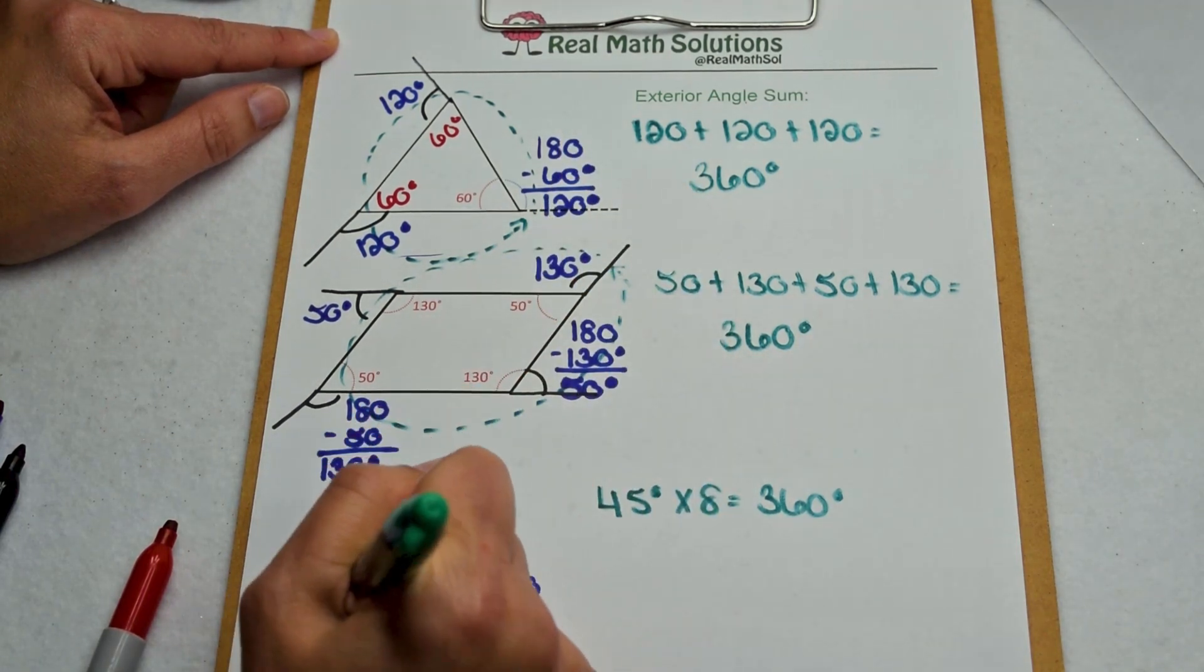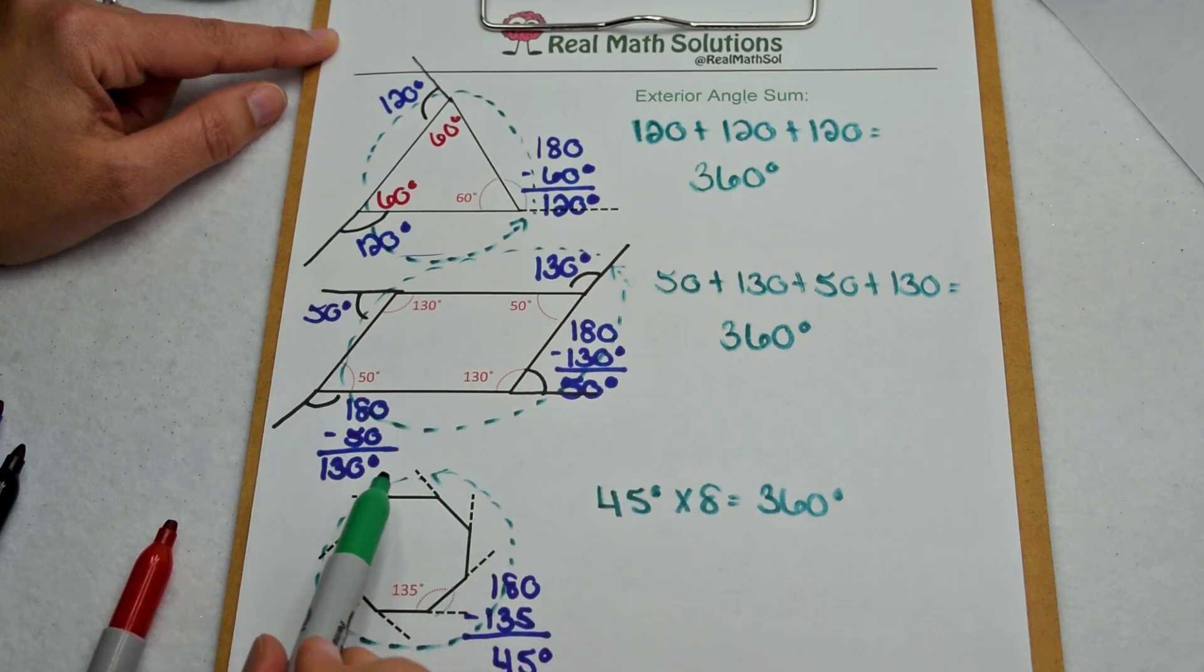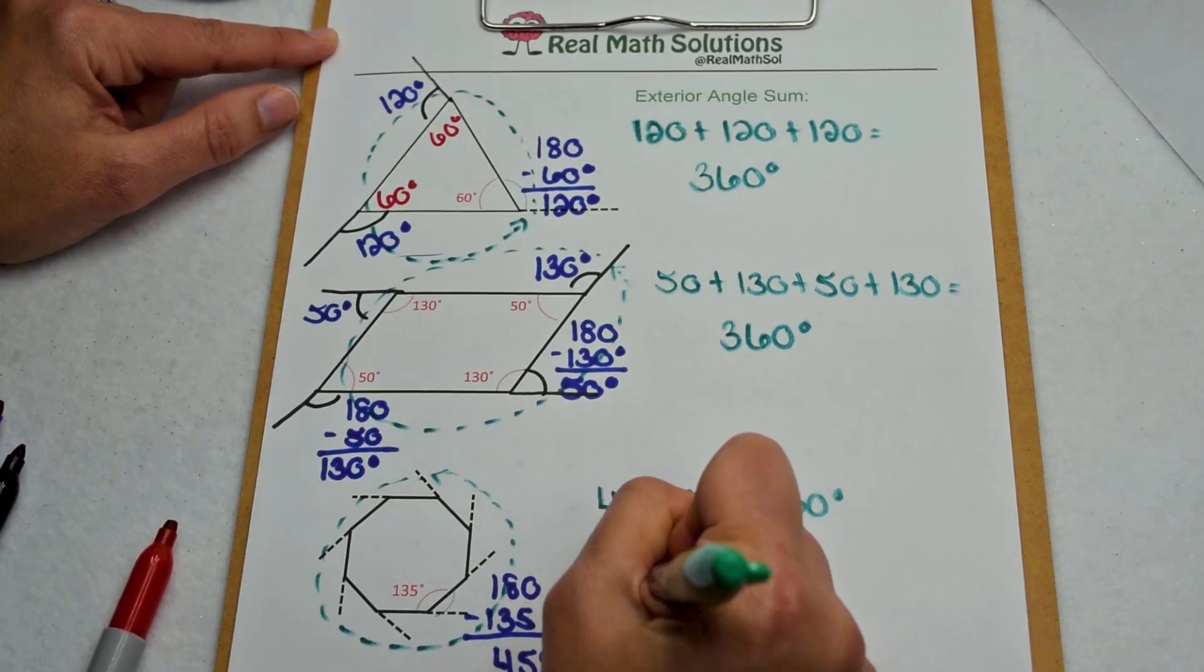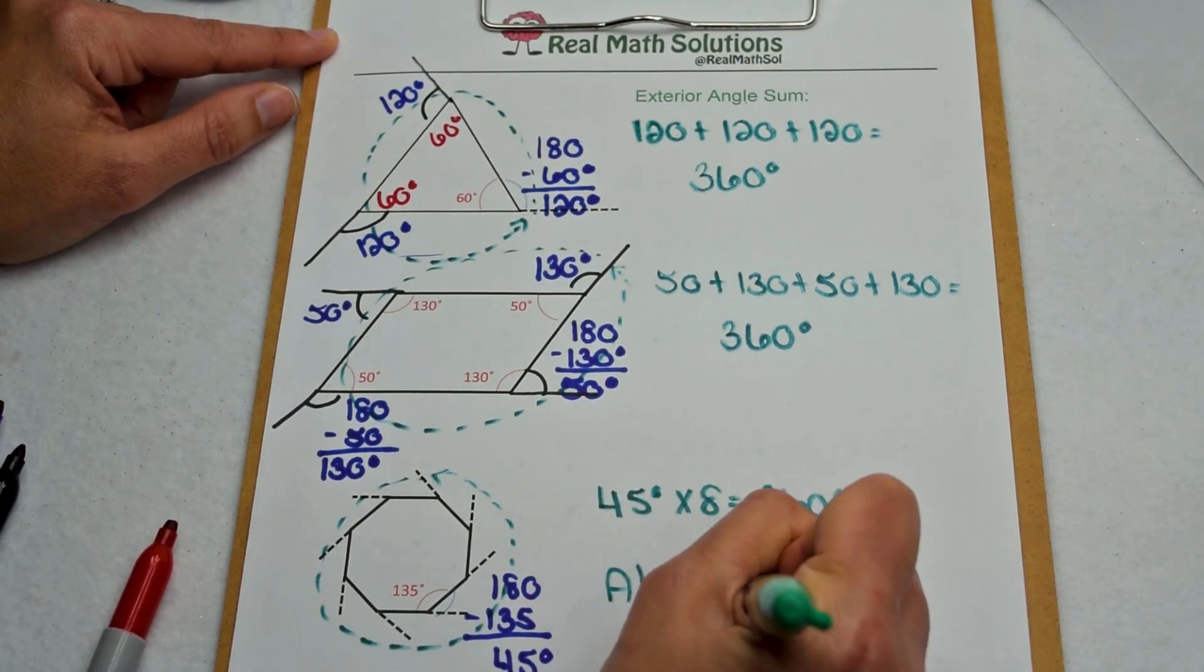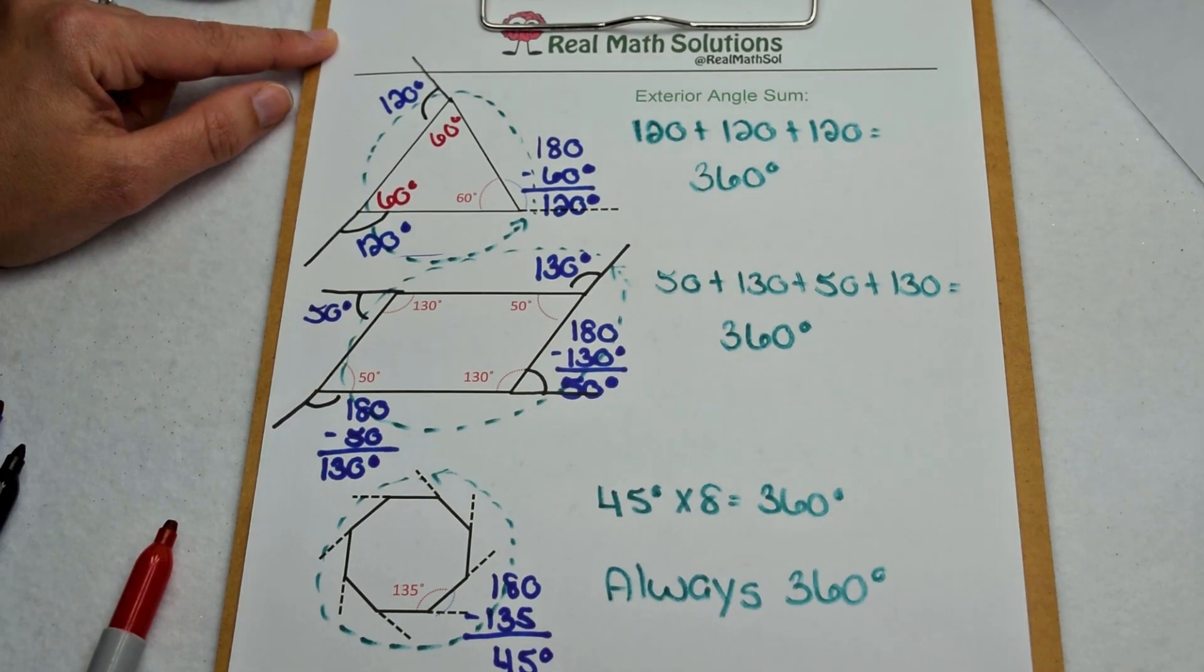So no matter what polygon you have, when you combine its exterior angles, you make a circle as you go around the figure. A circle is worth 360 degrees, so the exterior angle sum of any polygon is always going to be 360 degrees.